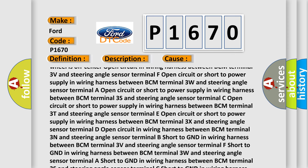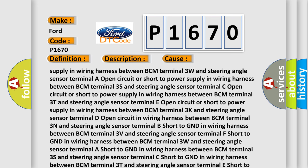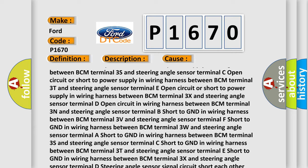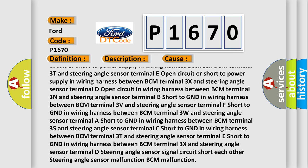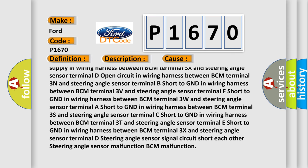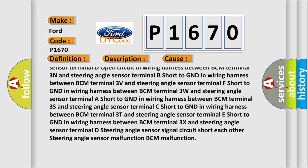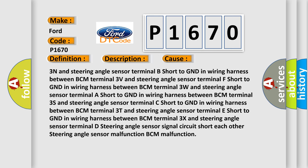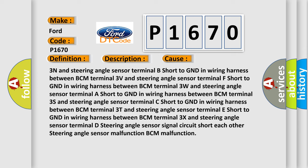Terminal C open circuit or short to power supply in wiring harness between BCM terminal 3T and steering angle sensor. Terminal E open circuit or short to power supply between BCM terminal 3X and steering angle sensor. Terminal D open circuit between W and steering angle sensor. Terminal B, terminal F, terminal A, terminal C, terminal E, and terminal D short to GND in their respective wiring harness connections between BCM terminals and the steering angle sensor. Steering angle sensor signal circuit short, steering angle sensor malfunction, or BCM malfunction.